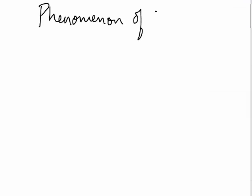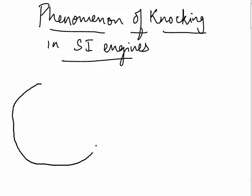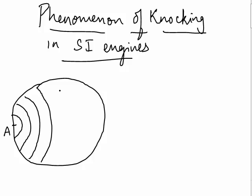Today we will study about the phenomenon of knocking in SI engines. So this is the cylinder. We have a spark plug and due to this spark there is a flame front that is produced. It moves from A to D.